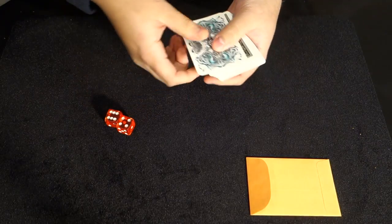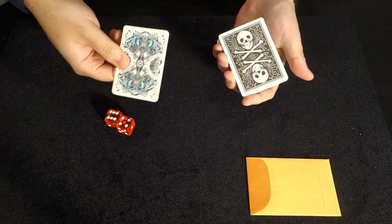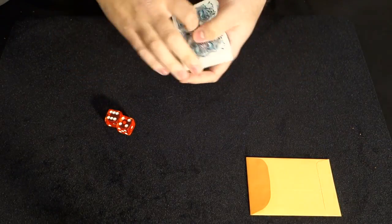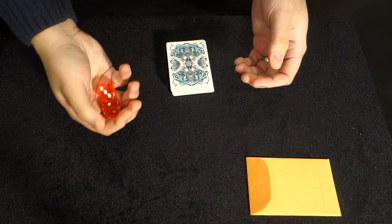So, for example, if your roll is two, we count one, two, and you'd have this skull card right here. Okay? So give the dice a roll.